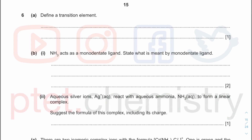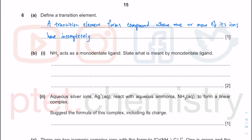This question is about transition elements. The definition of a transition element, as stated in the syllabus, is that it forms compounds where one or more of its ions have incompletely filled d-subshells. Note that incompletely filled and partially filled mean the same thing — either term is acceptable.